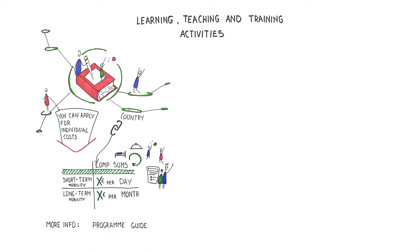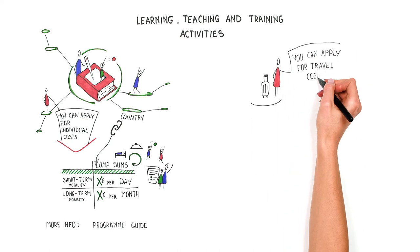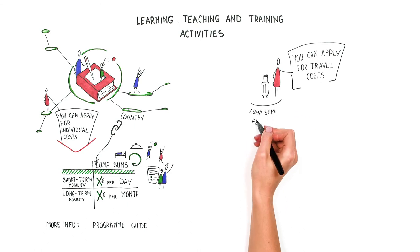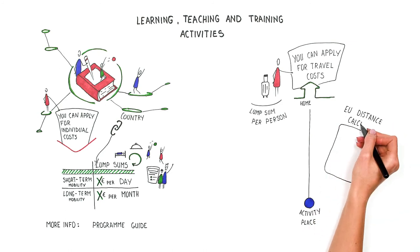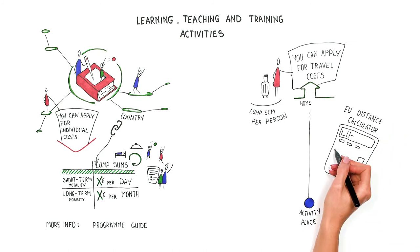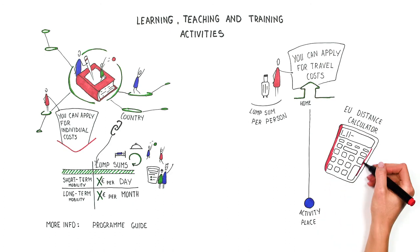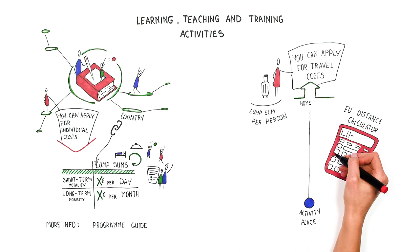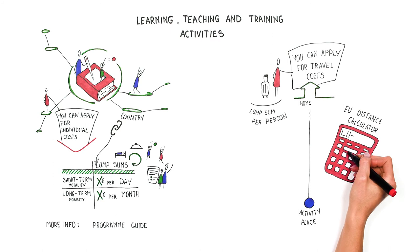In case of a residential mobility, you can also apply for travel costs, a lump sum per person depending on the travel distance between home and the venue as calculated by the EU distance calculator. Local participants get no travel costs. The funding is provided to participants from the country in which the activity takes place, provided that the distance between the place of departure and the venue is at least 10 kilometers.